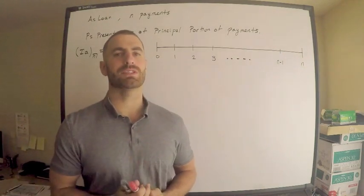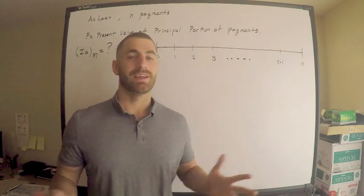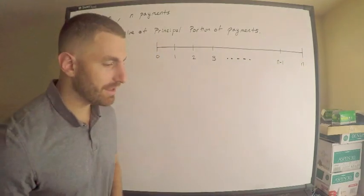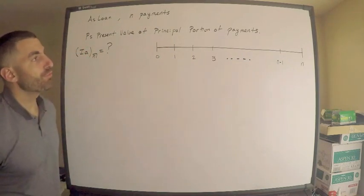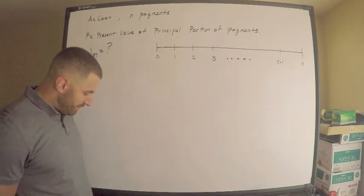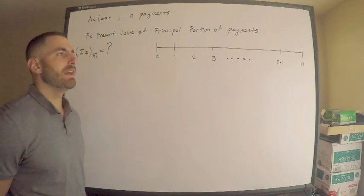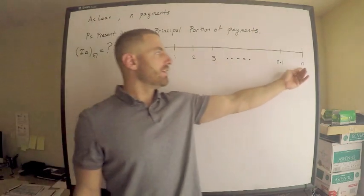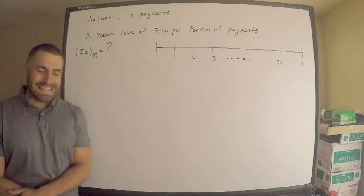This was a requested video, and I like this type of question because I don't even need a calculator. Read the question 5 to 100 times and write down the following: we are given that a loan amount is designated by the letter a, we have n payments, and I've drawn a time diagram going up to n — think of it as years or whatever pay period you want.